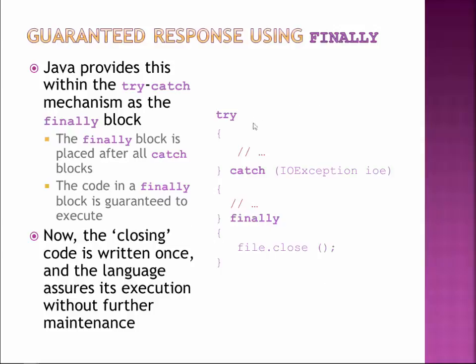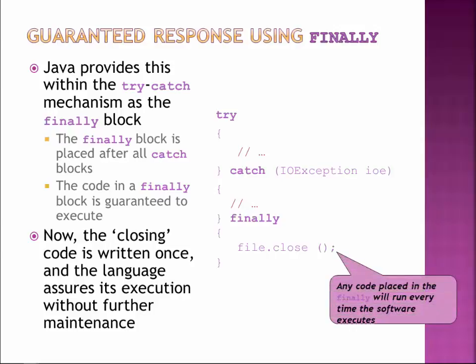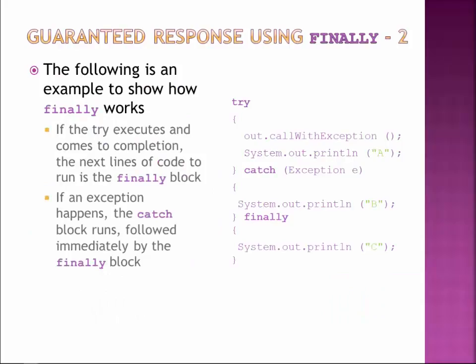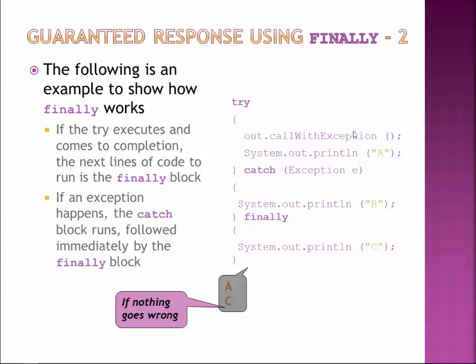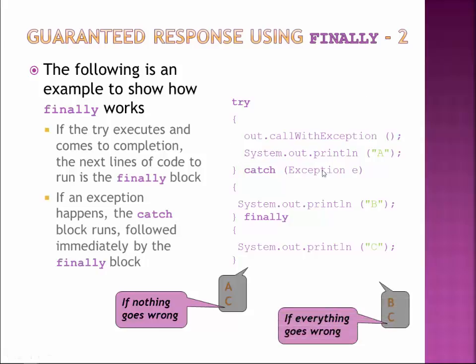That's the idea of the finally block — whether I do it successfully or whether I fail, the finally block will run every single time. So here's an example: if nothing goes wrong, it prints out A and then C. If an exception happens, B gets printed out instead of A, and then C again gets printed. The finally block runs every single time.